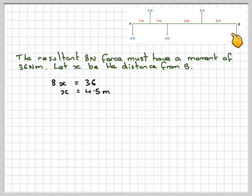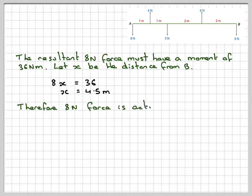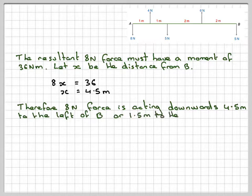So the eight newton force will be 4.5 meters from B or 1.5 from A and it will be acting downwards. Therefore, the eight newton force is acting downwards 4.5 meters to the left of B or 1.5 meters to the right of A.